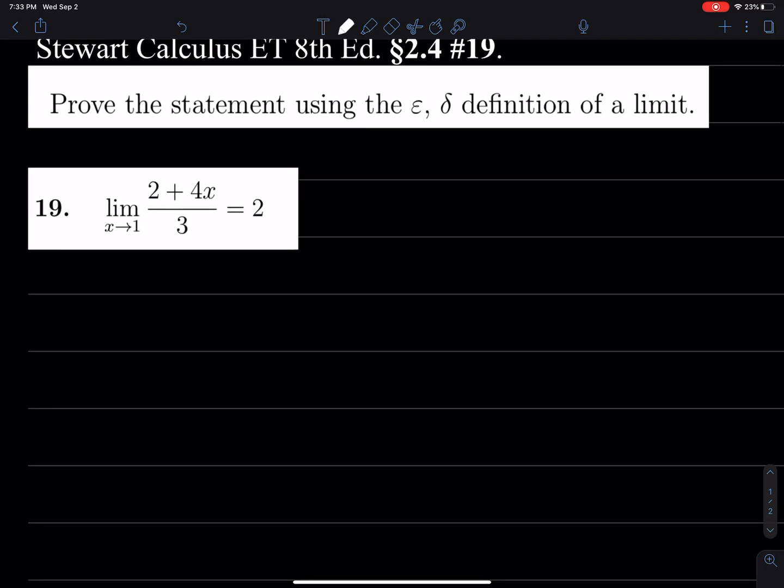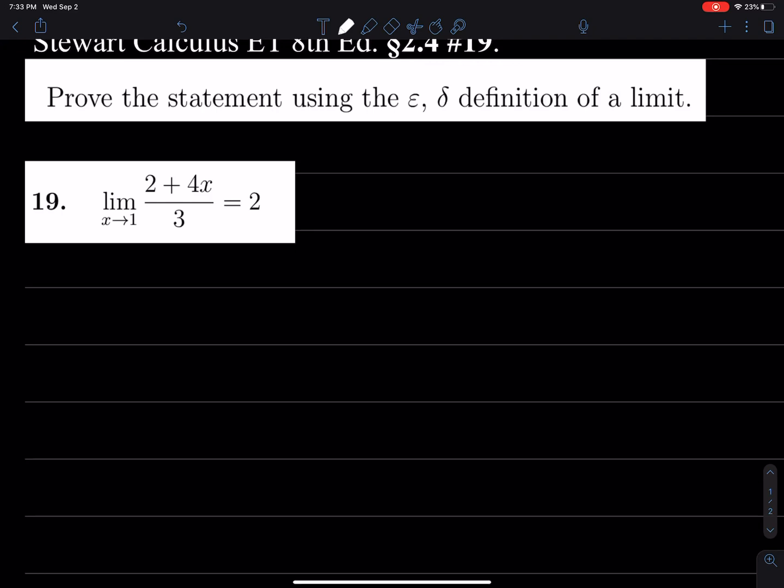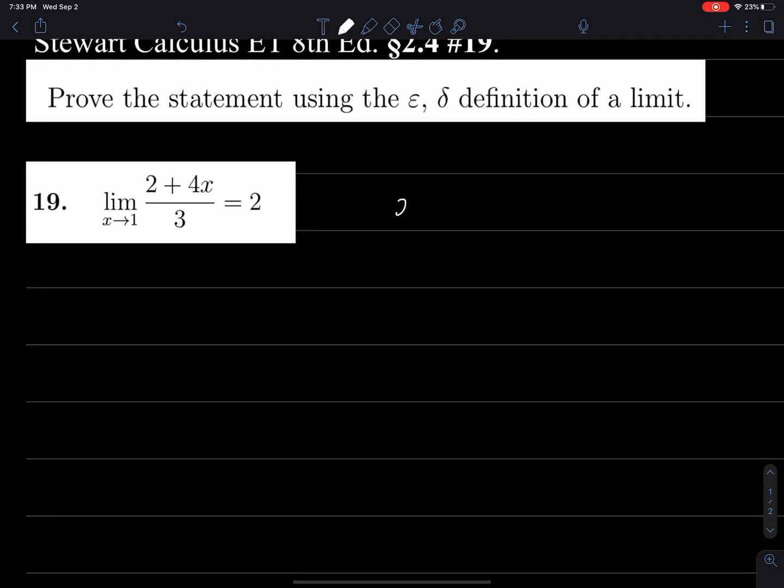Now one of the things we can do is note that (2 + 4x)/3 can be written as 2/3 + (4/3)x. So we'll just do a little note of that.